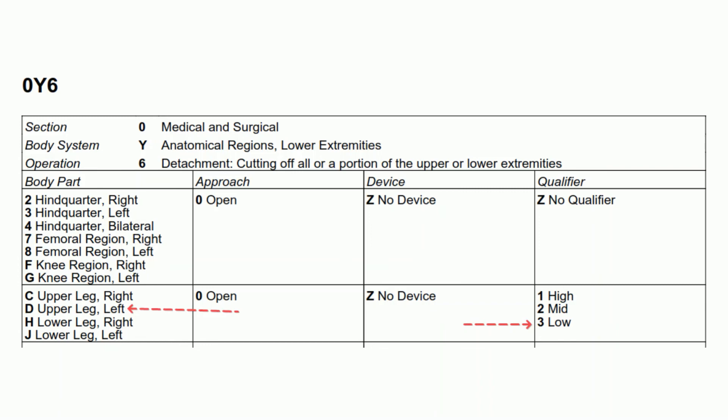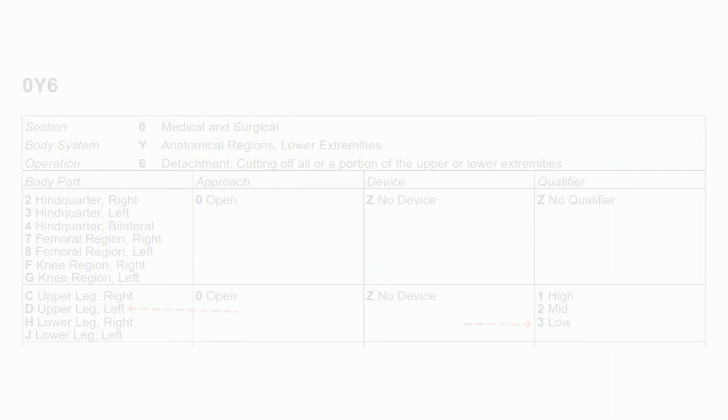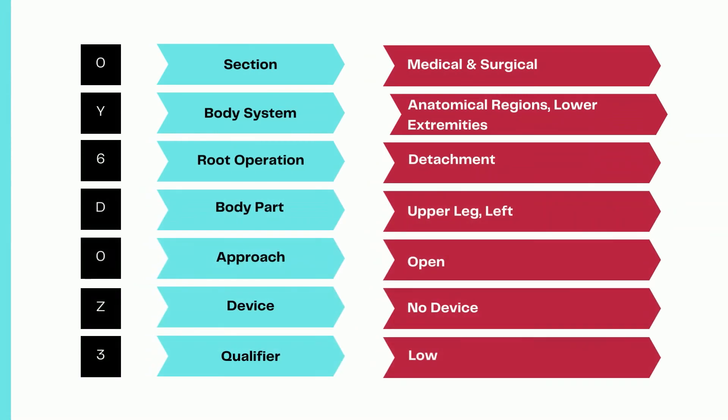In this procedure the upper leg is detached at the distal end of the femur, so the qualifier value is low amputation for the seventh character. The complete ICD-10-PCS code for the amputation at the distal end of the femur is 0Y6D0Z3.